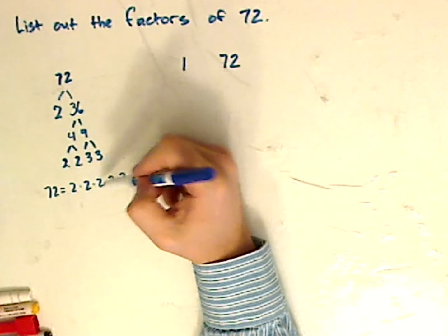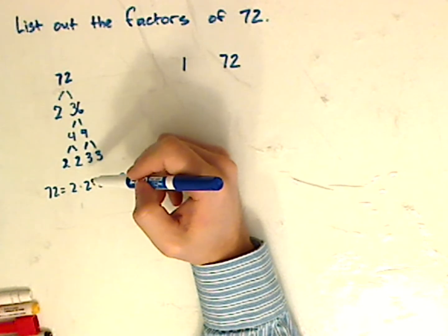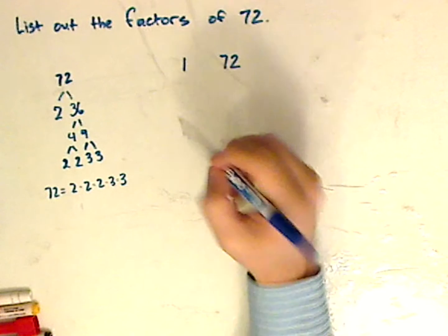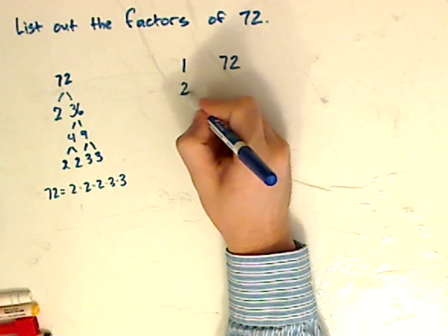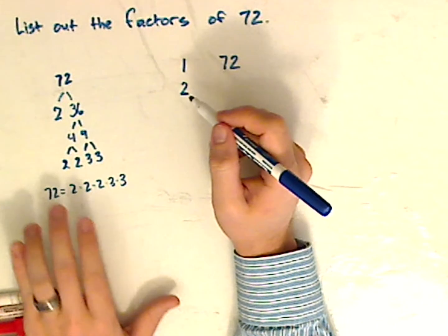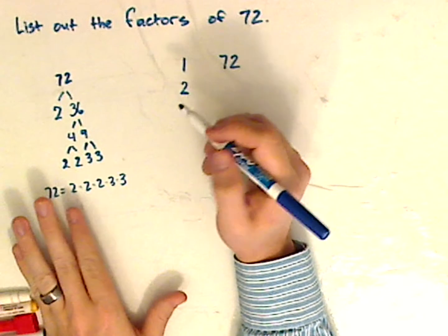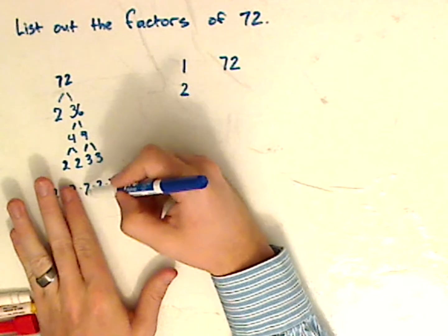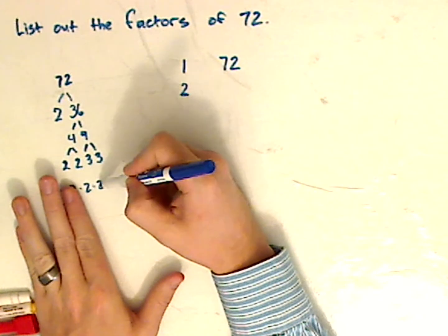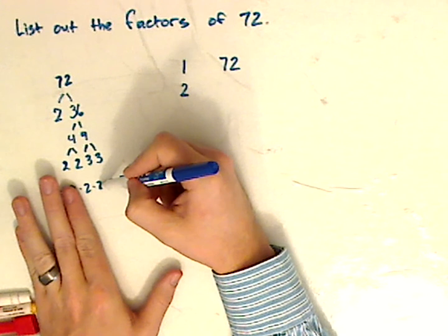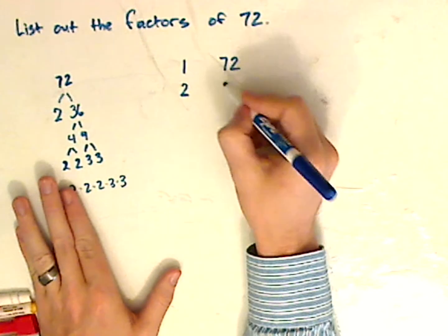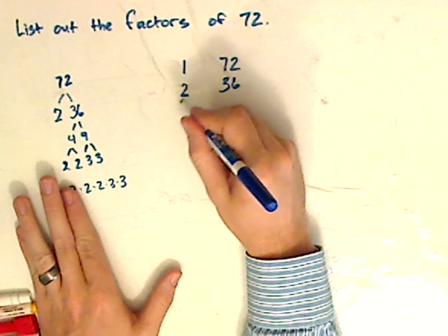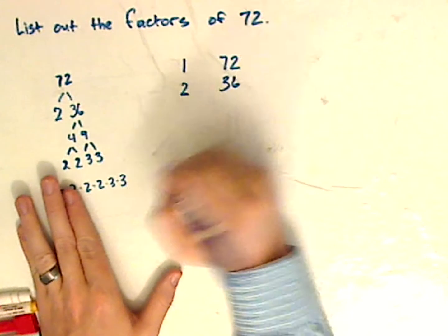Now you can use this, the prime factorization, to kind of cheat. So use 2. Now what you're going to do next is cover up the 2 and then just multiply these. So 2 times 2 is 4, 3 times 3 is 9. So 4 times 9 is 36. 2 times 36 is 72.